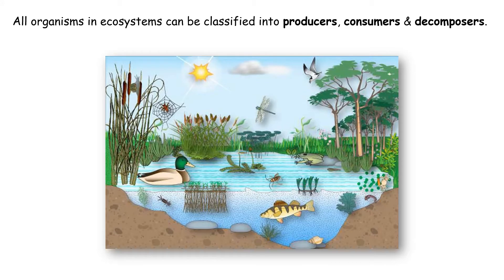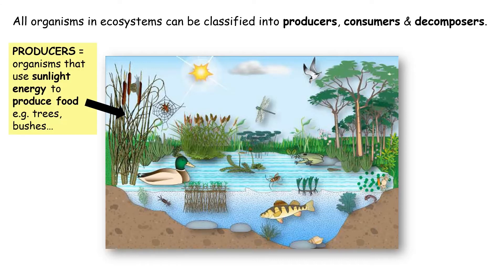All the living parts we can classify into producers, consumers, or decomposers. Producers are plants that produce food that can be eaten. So a bush might have berries on and trees might have fruit on that insects, birds and animals can eat.